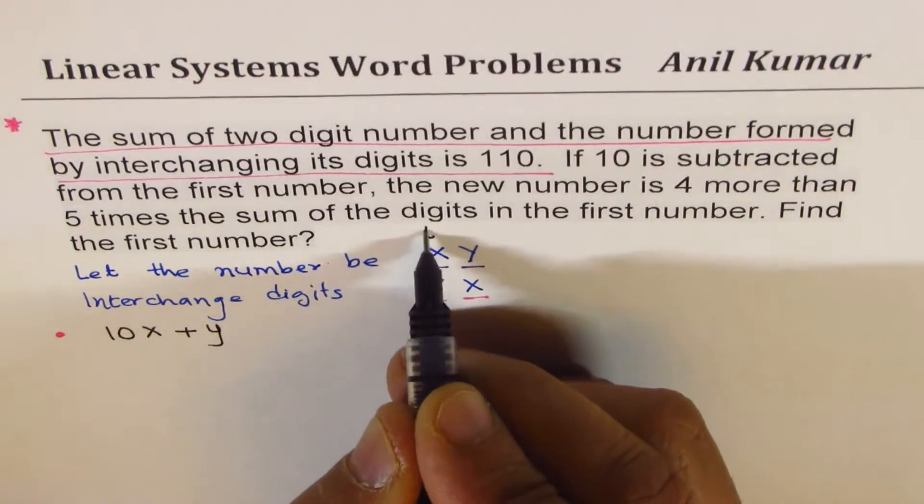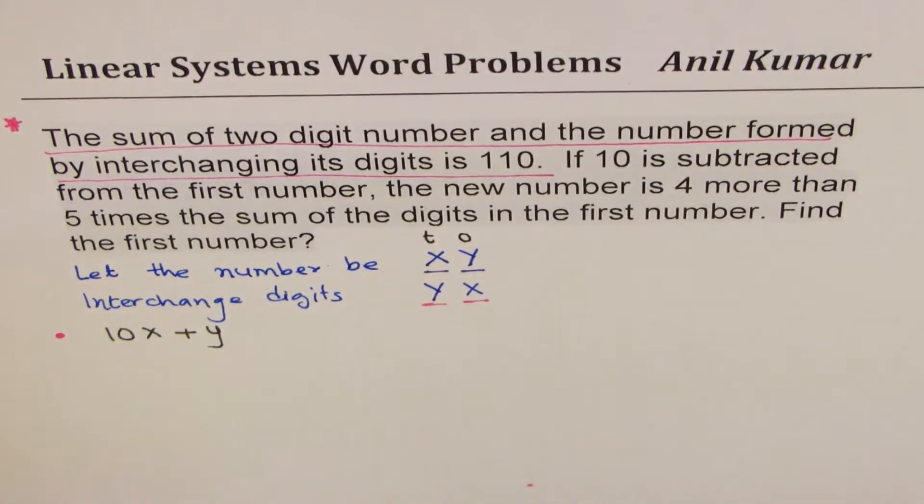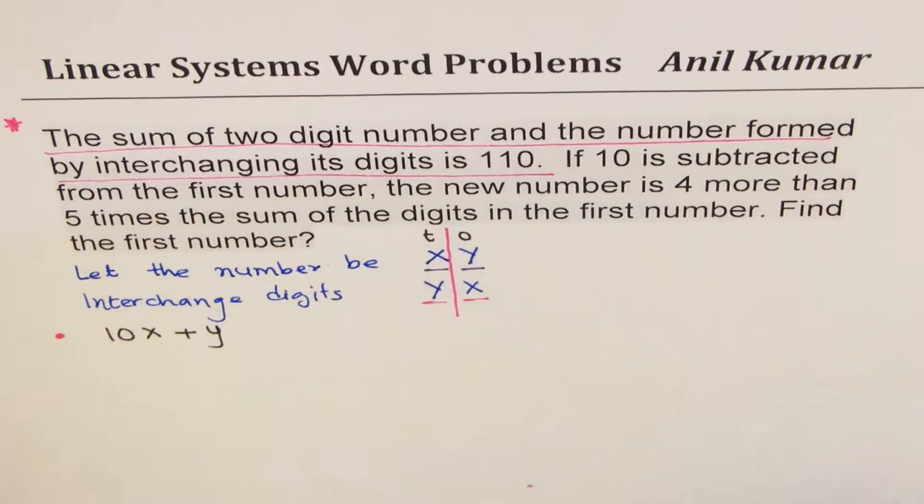The number really is 10 times x plus y, since this is tens place. And this is ones place. So think about place to get its value.